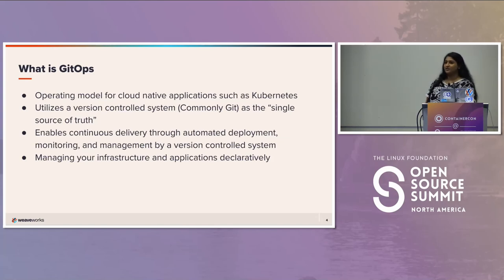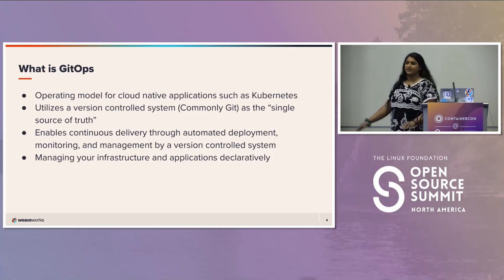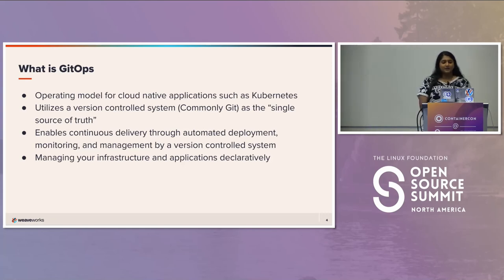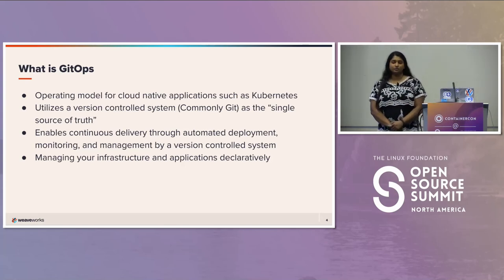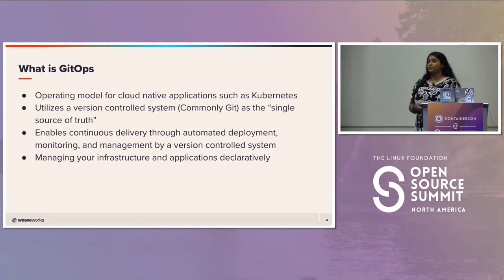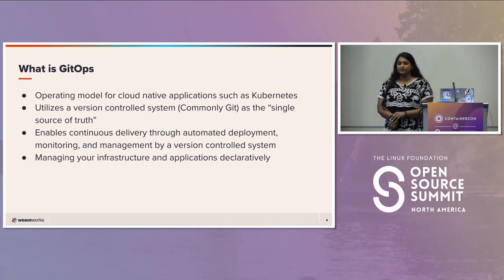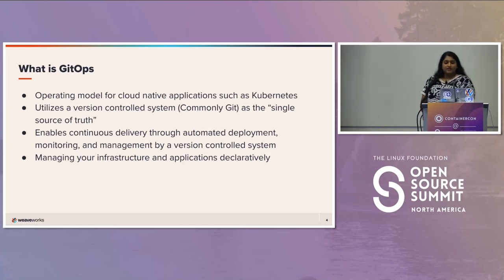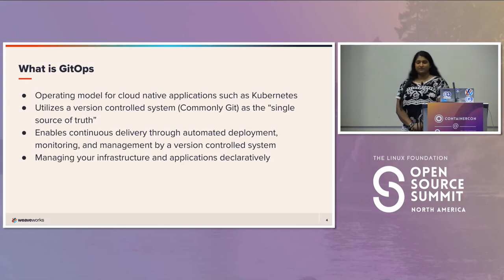If you're not familiar with GitOps, I just wanted to give a brief intro to get us all on the same page. GitOps is an operating model for cloud-native applications such as Kubernetes, but it's not limited to Kubernetes, as you're about to find out. You basically utilize a version-controlled system — most commonly Git, hence the name GitOps — as a single source of truth. You can enable continuous delivery through automated deployment, monitoring, and management by a version-controlled system.